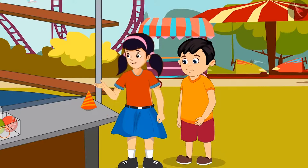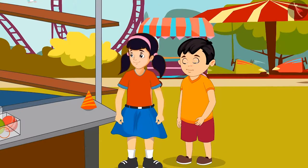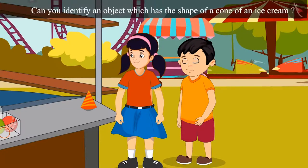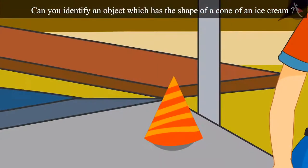Wow Chotu, now I will put the last item. This shape is like an ice cream cone. Children, can you identify an object which has the shape of an ice cream cone? You identified it correctly. This is a cone-like object.